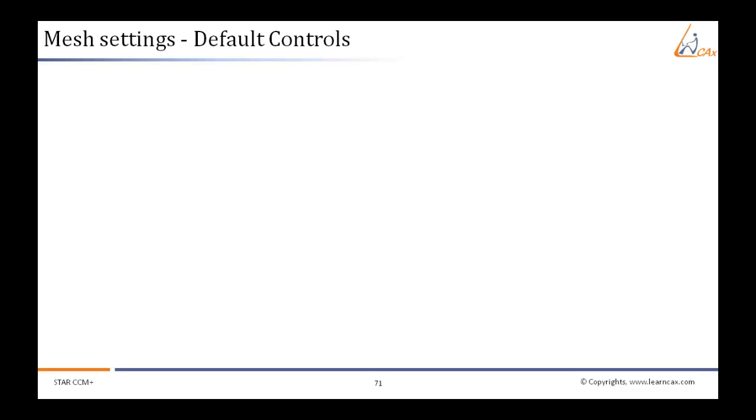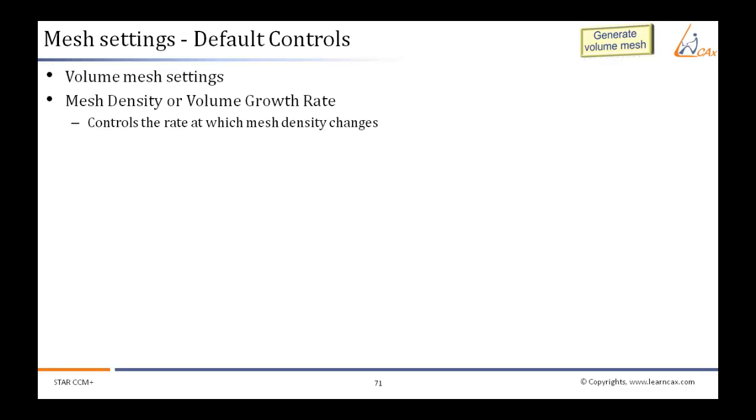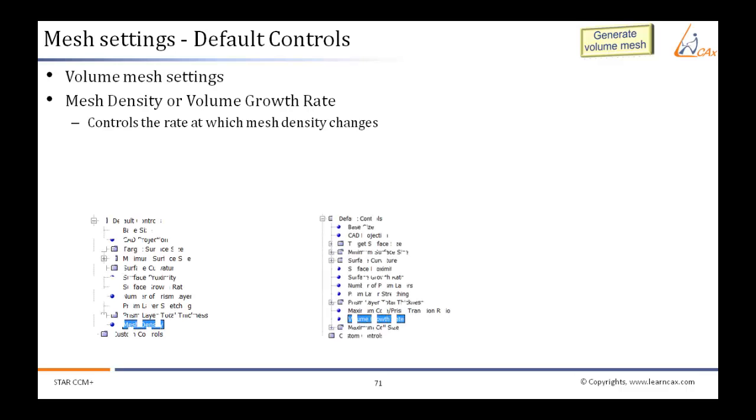The next setting under default control is the volume meshing setting. Under this comes the mesh density or volume growth rate. This controls the rate at which mesh density changes.